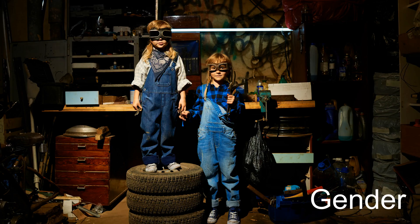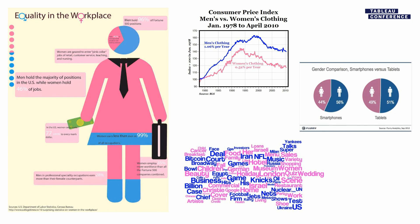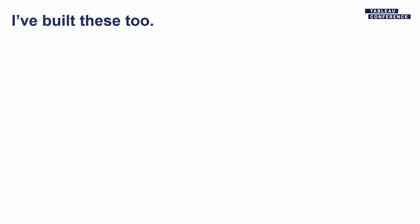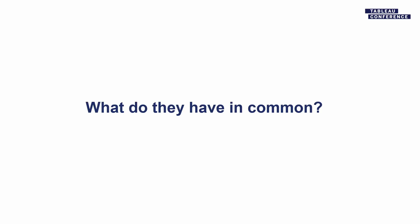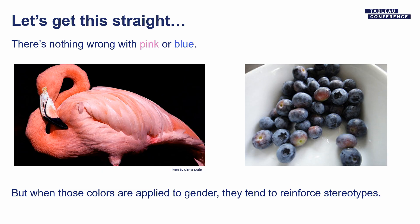So we're going to start with gender. How many of you have seen charts that look like this? I've built these — I build them all the time. And what do they have in common? It's the pink thing. I want to be really clear about this: there's nothing wrong with pink and blue. Nothing. But when you apply those colors to a gender story, you tend to reinforce stereotypes about women being soft and pink.